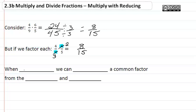So when multiplying, we can divide a common factor from the numerator and denominator.